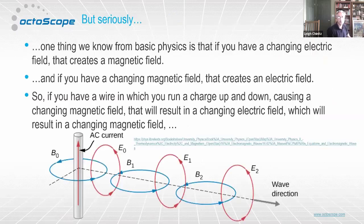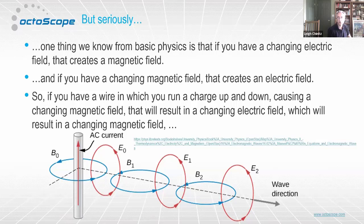We know a couple of things from basic physics. If you have an electric field that's changing, that creates a magnetic field. If you have a changing magnetic field, that creates an electric field. If you take a wire and run current through it, you'll get a magnetic field around that wire — that's what an electromagnet is all about. If you start changing that current — using alternating current, so the current goes up and down the wire — you'll get a changing magnetic field that flips back and forth, resulting in a changing electric field, and so on.